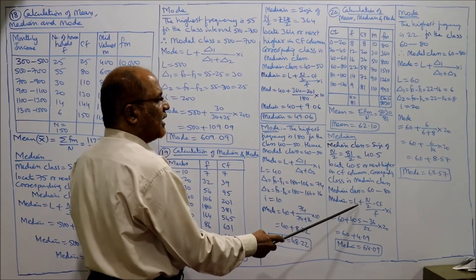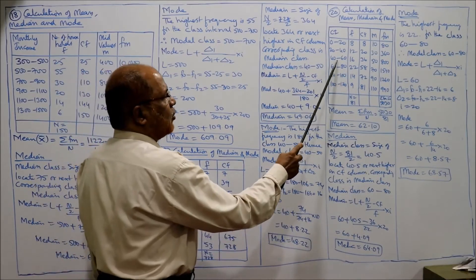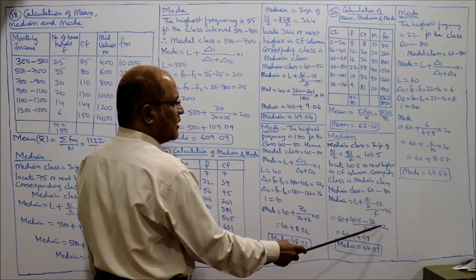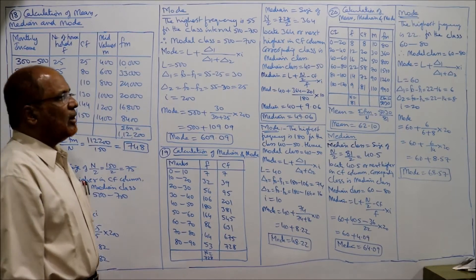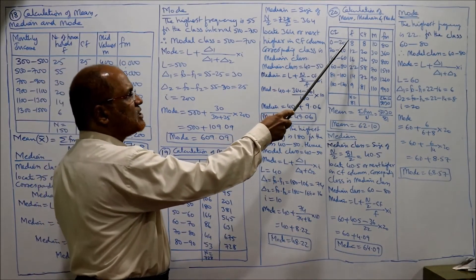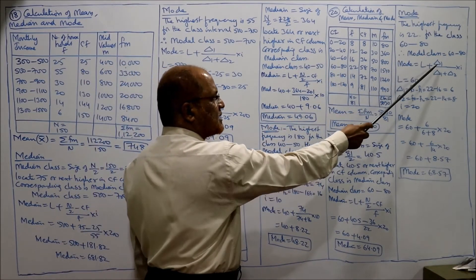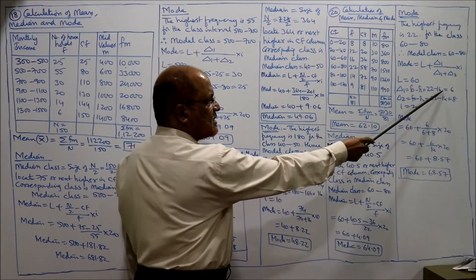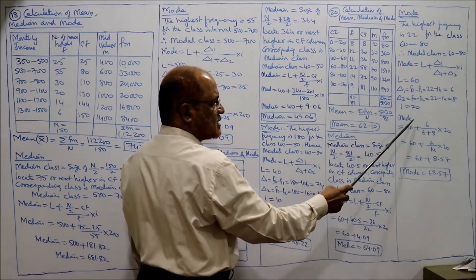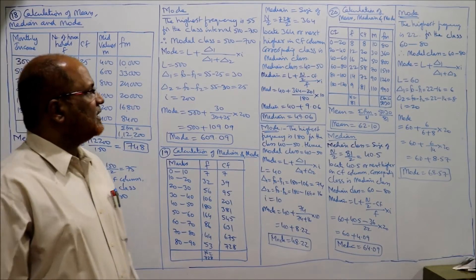Median = L + [(N/2 − CF) / F] × I. L=60, N/2=40.5, CF of the preceding class (40–60) = 36, F=22, I=20. So: 60 + [(40.5−36)/22] × 20 = 60 + 4.09 = 64.09. That is the median. For mode, by inspection the highest frequency is 22, against the class 60–80. Modal class = 60–80. Mode = 60 + [Δ1/(Δ1+Δ2)] × I = 60 + [(22−16)/(22−16+22−14)] × 20 = 60 + [6/14] × 20 = 68.57. Problems 18, 19 and 20 are completed.